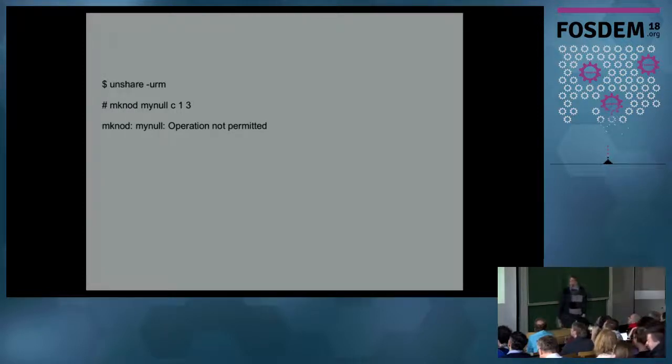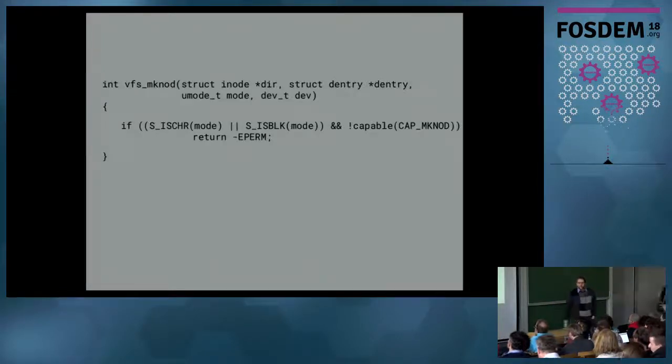So for motivation, if I do an unshare and I'm in a user namespace and I try and go make node, I'm not allowed to do that. And for those of you who are familiar, one three are the device major minor for dev null.